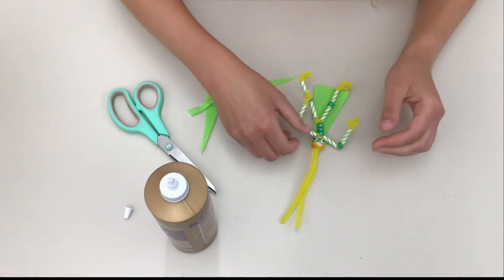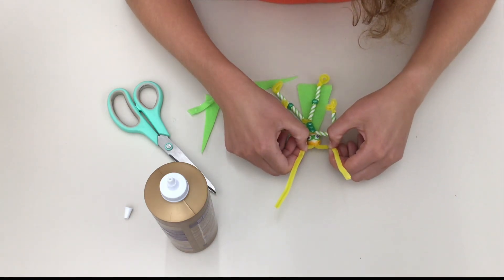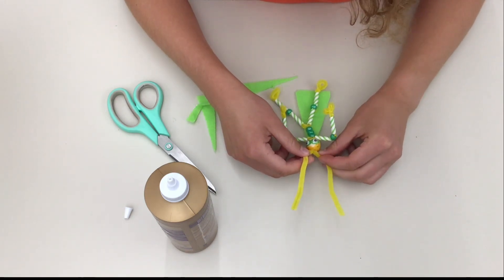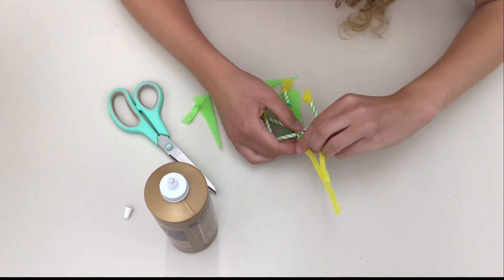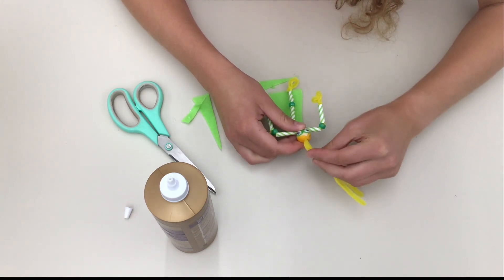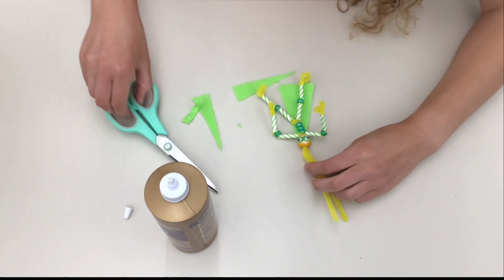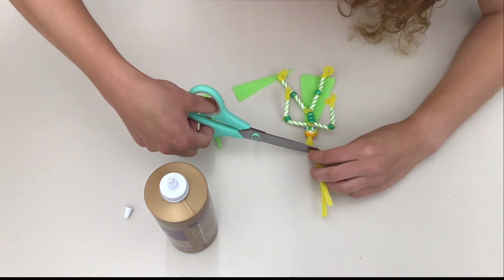Once you've slid your head on, you can take your scissors and trim the pipe cleaner above the head. Leave about a centimeter above the head because we're going to bend that over and use it for the neck, so watch where I cut it and then do that to your superhero.